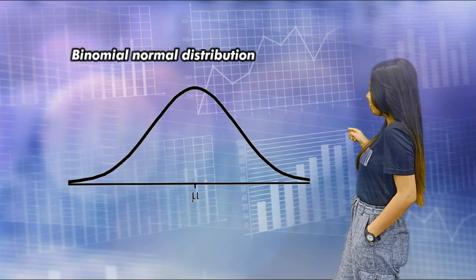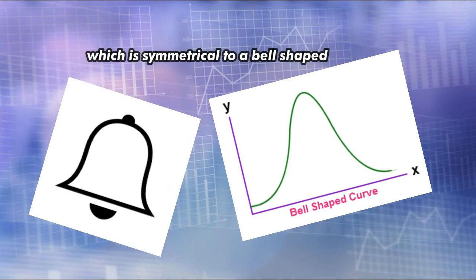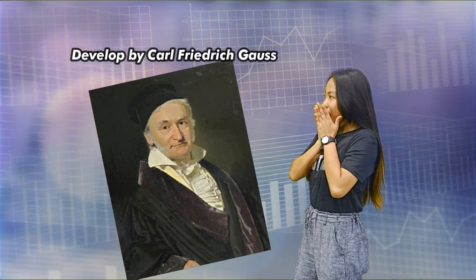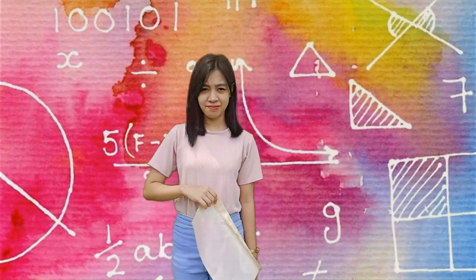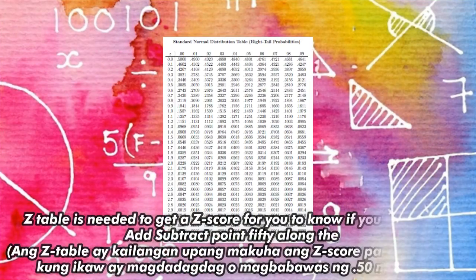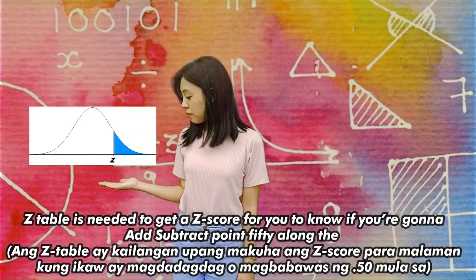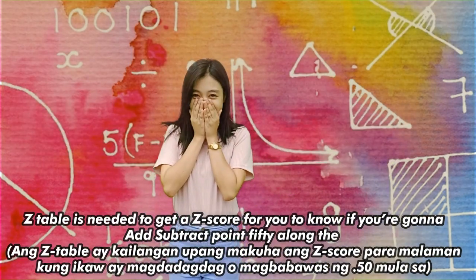Binomial normal distribution, which is symmetrical with the bell shape, developed by Carl Friedrich Gauss. You need to get a z-score — for you to know if you're going to add or subtract 0.50 along the mean.